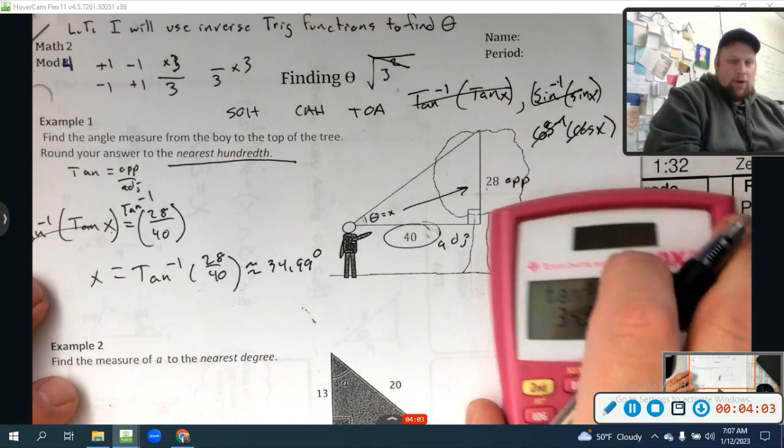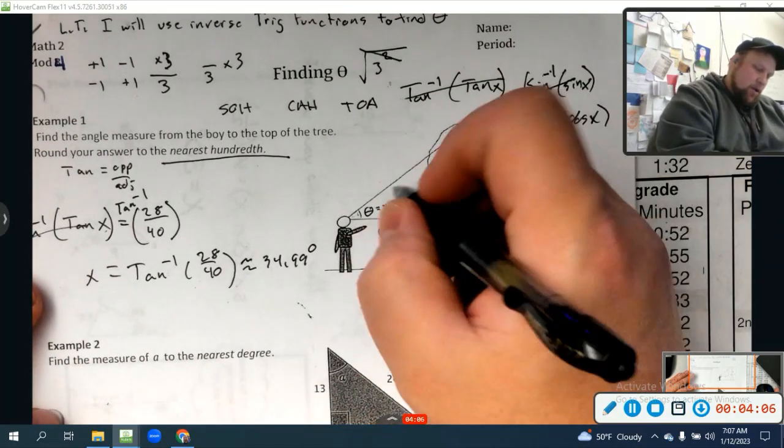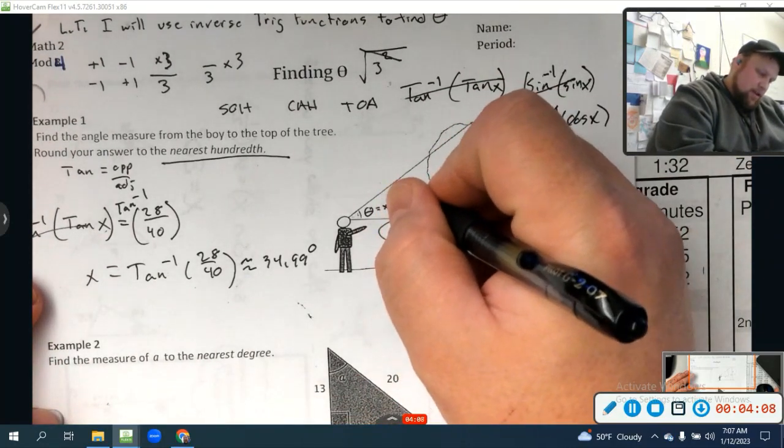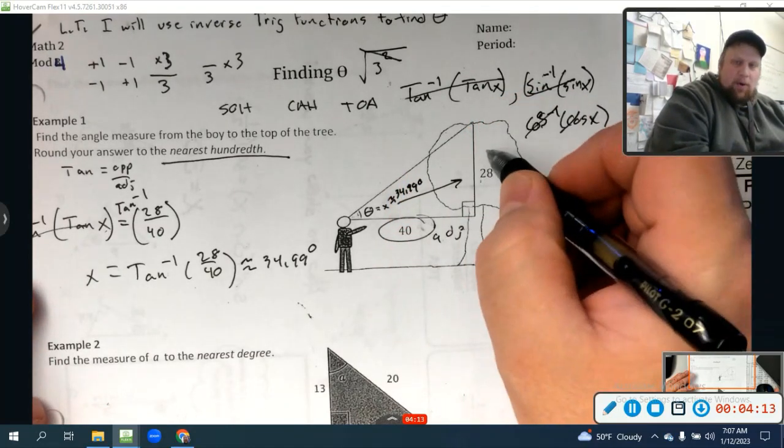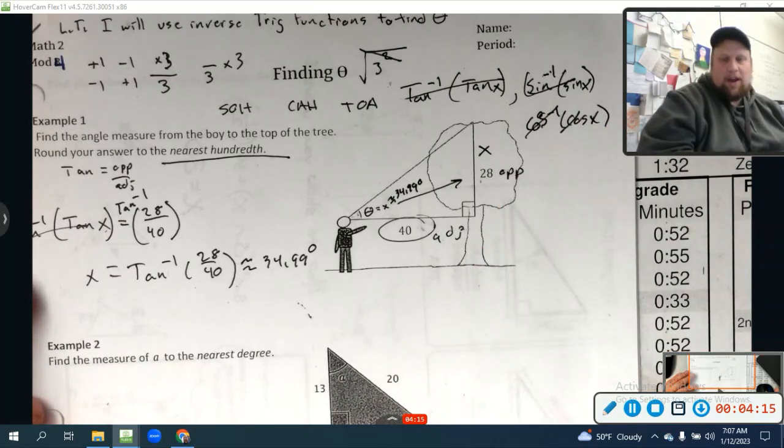Now, I do want to prove that this works. Because if this works, if this is approximately 34.99 degrees, right, then let's say I wanted to find this length right here. Let's say I didn't know it was 28. I just think it's x.